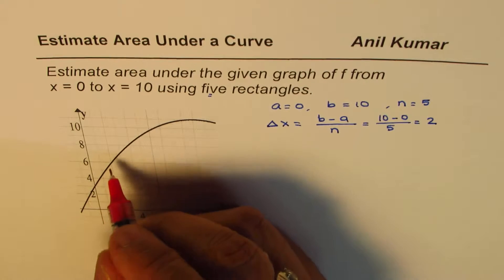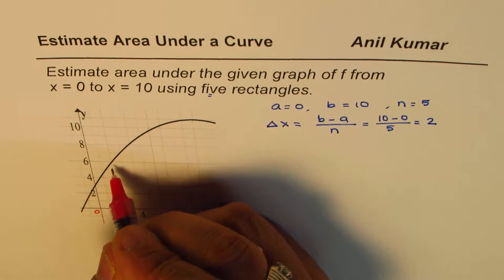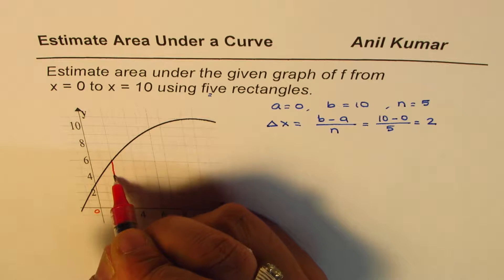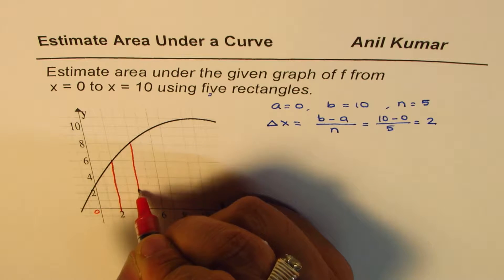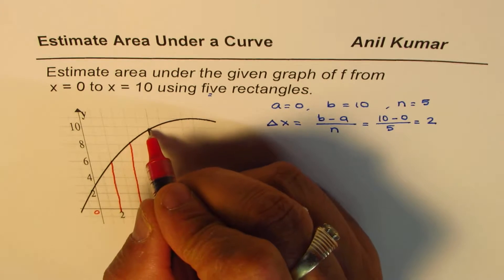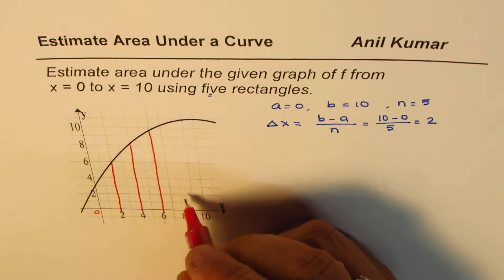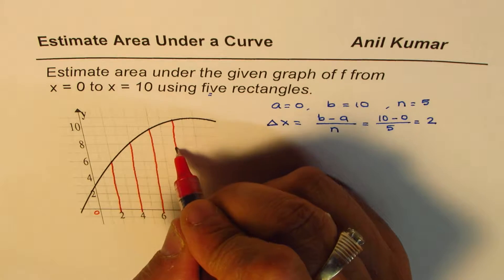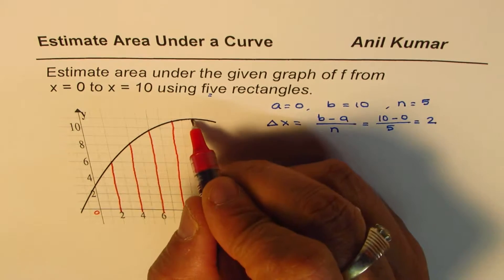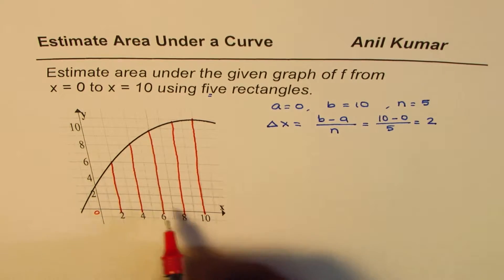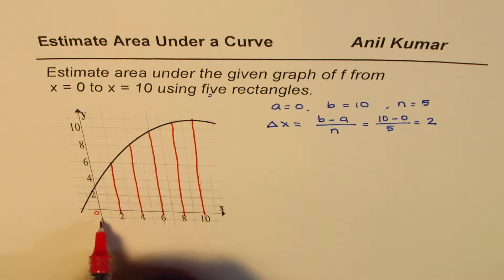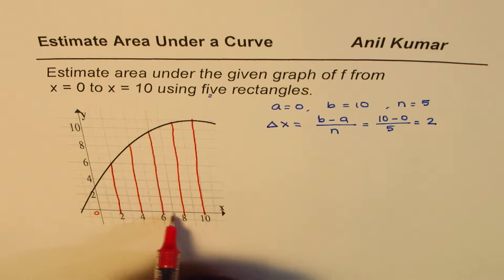Let me draw these rectangles starting from 0. The boundaries fall at 2, 4, 6, 8, and 10. So these are 5 equally spaced rectangles with boundaries from 0 to 2, 2 to 4, 4 to 6, 6 to 8, and 8 to 10.